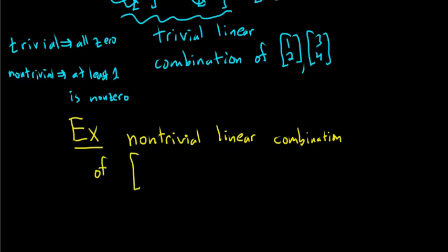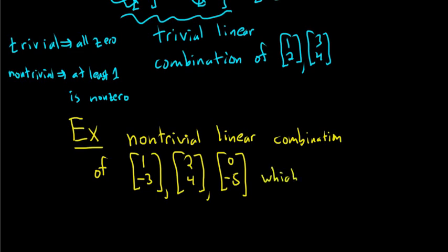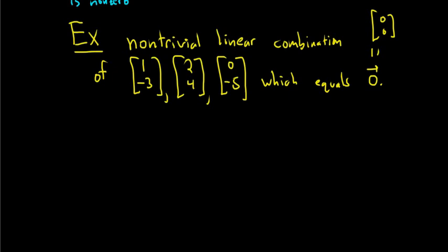So a non-trivial linear combination of, and we have three vectors here. We have 1, negative 3, we have 2, 4, and then we have 0, negative 5. So we need a non-trivial linear combination of these vectors, which equals 0. And we have a little arrow above it. So this here, this is the 0 vector.